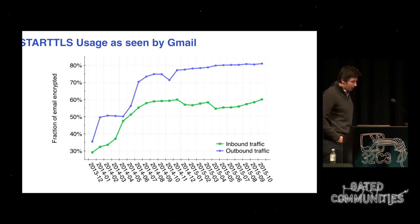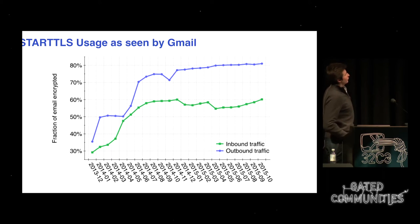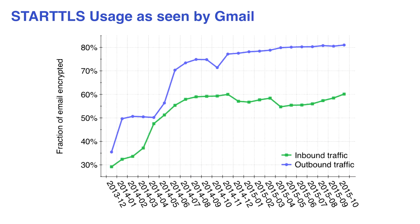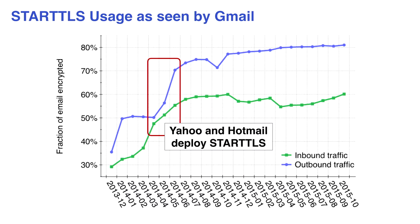Schauen wir uns die Daten an: Das ist der Anteil der Nachrichten die bei Gmail rein und rausgehen, bei denen TLS verwendet wird. Wir haben großen Fortschritt gemacht in den letzten paar Jahren. Etwa 80 Prozent der Nachrichten die rausgehen verwenden jetzt STARTTLS, und ungefähr 60 Prozent die reinkommen benutzen STARTTLS. Anfang 2014 haben Yahoo und Hotmail begonnen STARTTLS zu verwenden. Aber wenn man das beiseite lässt, ist nicht viel passiert – wir machen keine großartigen Fortschritte, es ist nur eine kleine Handvoll Anbieter die umgestellt haben.